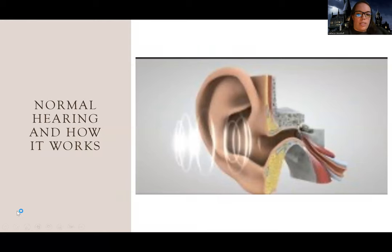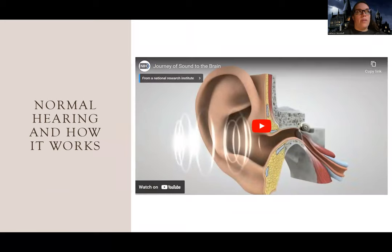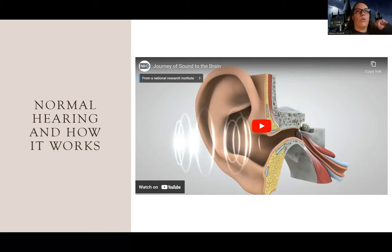This video covers how hearing works, which is relevant because it affects some of our disorders. With eye disorders, the only thing really affected is vision. But the ears have two functions: you either have hearing problems or you have balance problems. After this video, when we go into the three disorders, always think: is this a hearing problem, a balance problem, or both?